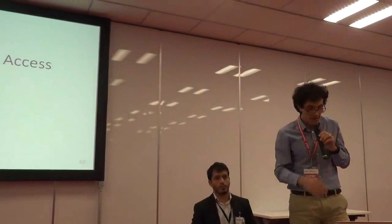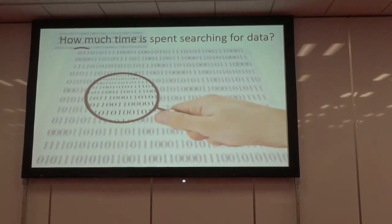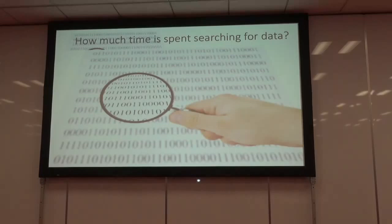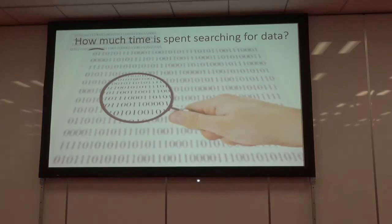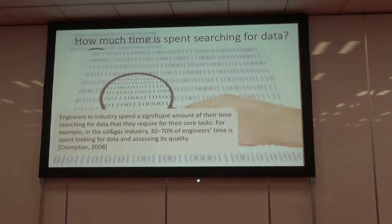Now let's continue with the third part: another important use case of semantics — searching for data across a large, heterogeneous collection of data sources that may differ not only in file formats but also in how they semantically represent the same data items. This semantic heterogeneity makes it difficult to access data in a uniform way.